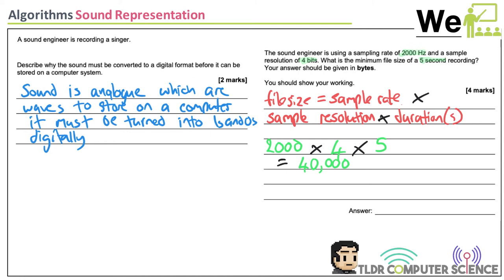That's 40,000 bits. The question asks for the answer in bytes, so divide by 8: 40,000 divided by 8 equals 5,000 bytes.